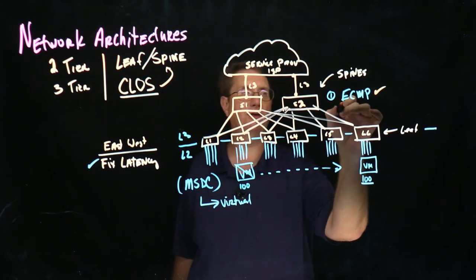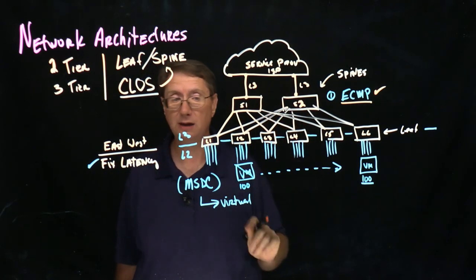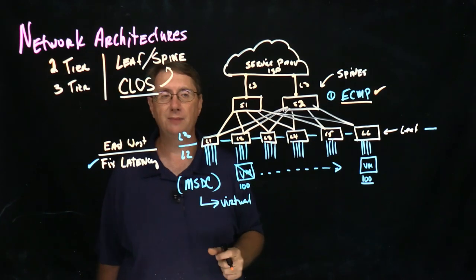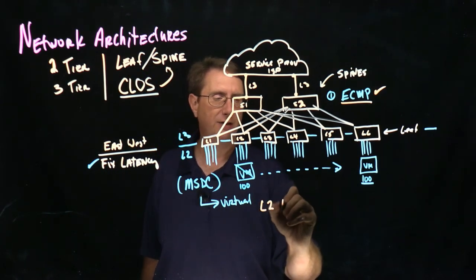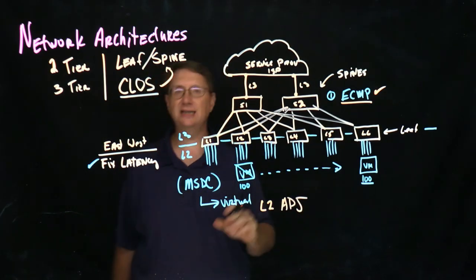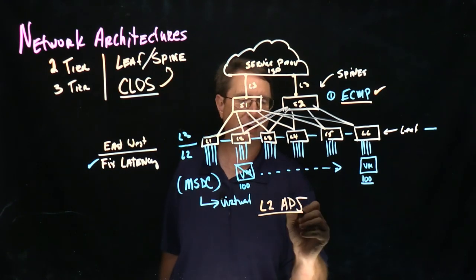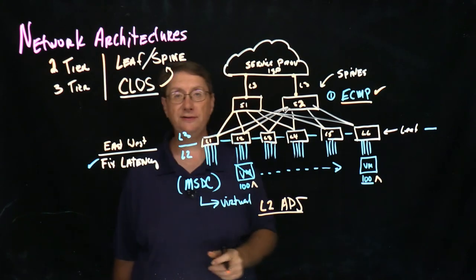If I need more throughput, I could always add more spines. If I need to handle more users, I can always handle more leaves. But the problem is that we have this scenario that we just described that requires that I need to find a way to extend the layer two environment. So I want to maintain layer two adjacency between different leaf switches.